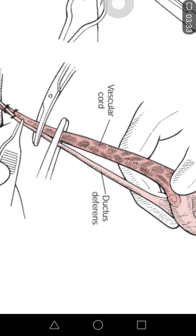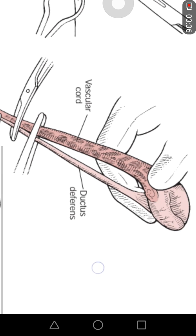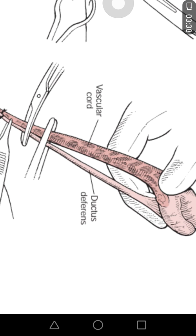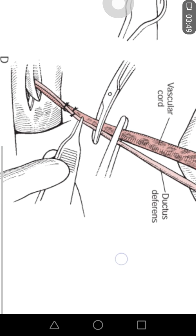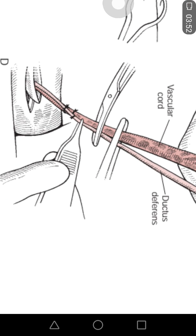The spermatic cord is further divided into two parts: the vascular part and the ductus deferens. In the next step, we have to ligate the vascular cord and the ductus deferens separately, and after they are separated, both these cords are ligated together.